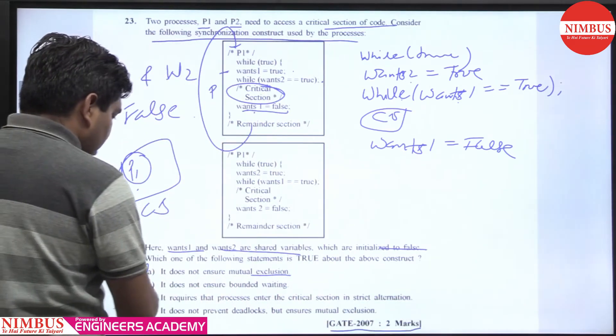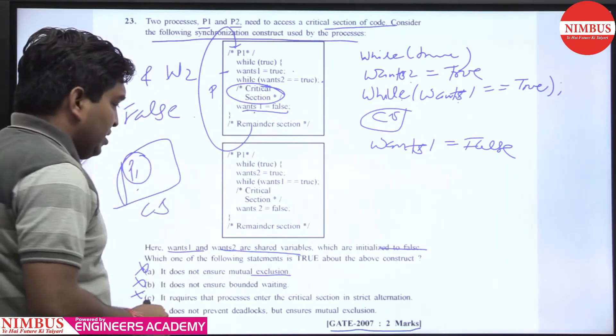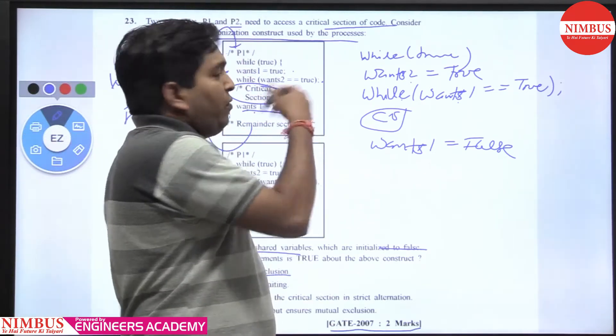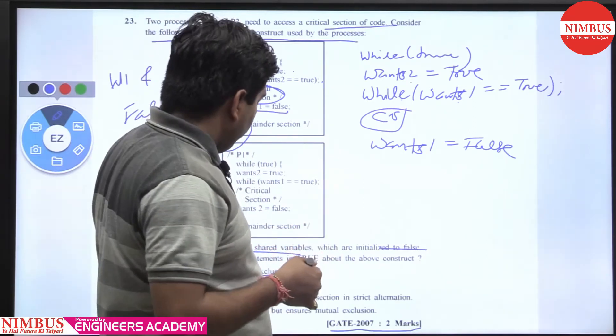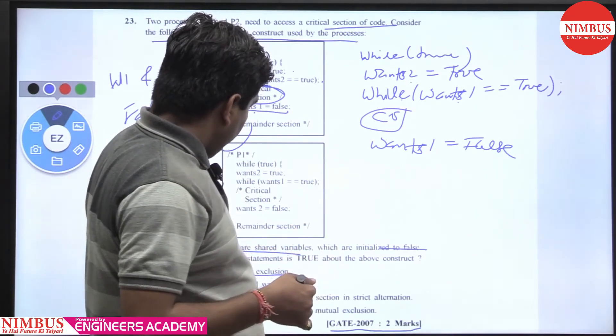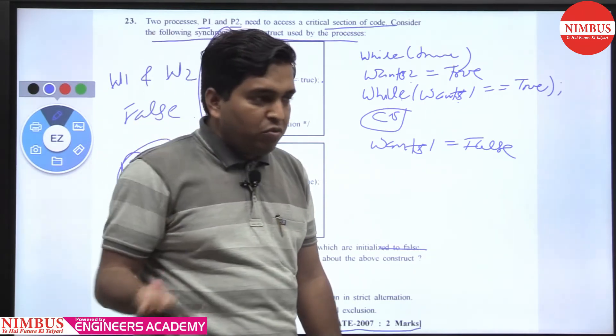Does not ensure bounded waiting. It requires a process enter in the CS in strict alternation - no. If P1 wants to continue again, then it will go into the CS. So there is no strict alternation. Last point, it does not prevent deadlock but ensures mutual exclusion.